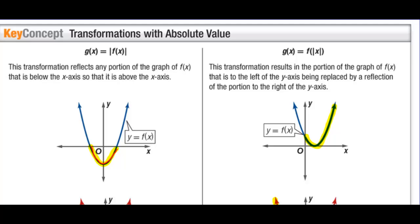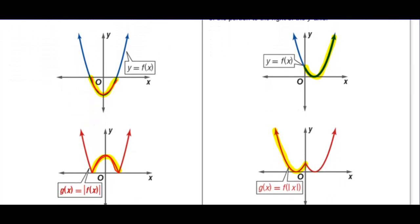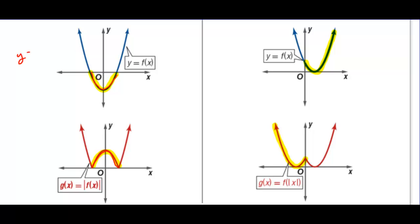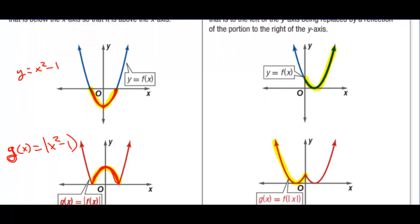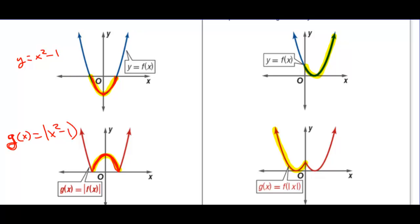Transformations with absolute value. If g of x equals the absolute value of f of x, this transformation reflects any portion of the graph of f of x that is below the x-axis so that it is now above the x-axis. For example, for y equals x squared minus 1, there's a portion of the graph below the x-axis. If g of x is the absolute value of (x squared minus 1), any y-values that were negative now become positive. If g of x equals f of absolute value of x, this results in the portion of the graph to the left of the y-axis being replaced by a reflection of the portion to the right of the y-axis.